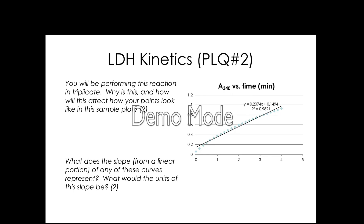The next question asks us to think about why we're performing this reaction in triplicate. Anytime we do something in triplicate, that's generally going to be validating the precision of our data. And how will this affect how your points look in the sample plot? Each individual reaction — we'll get to this in the next pre-lab question.